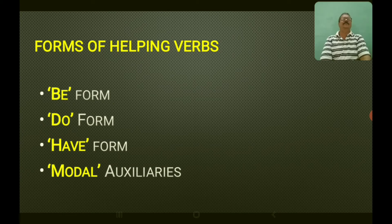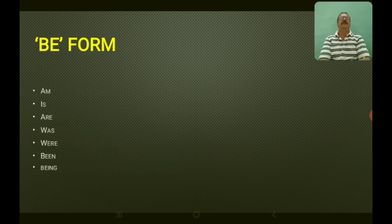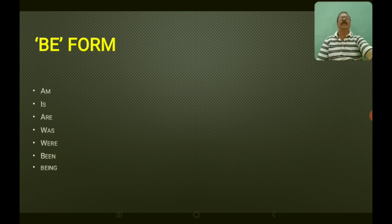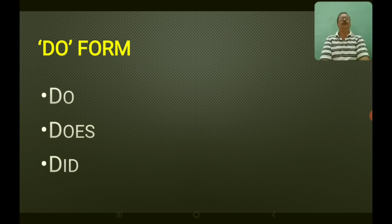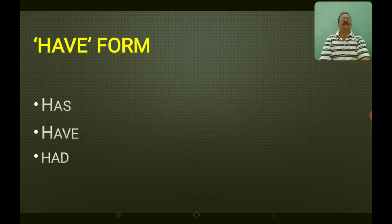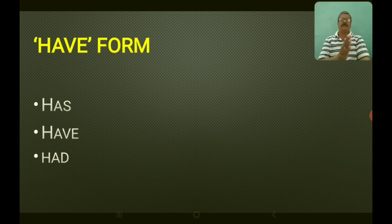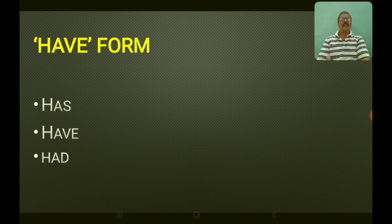You have four forms of helping verbs: be form, do form, have form, and modal auxiliaries. The be form of verbs are: am, is, are, was, were, been. The do form of helping verbs are: do, does, did. The have form of helping verbs are: has, have, had. The be form, do form, and have form — all three forms of helping verbs — are called primary auxiliaries because they can be used as main verbs as well as helping verbs.